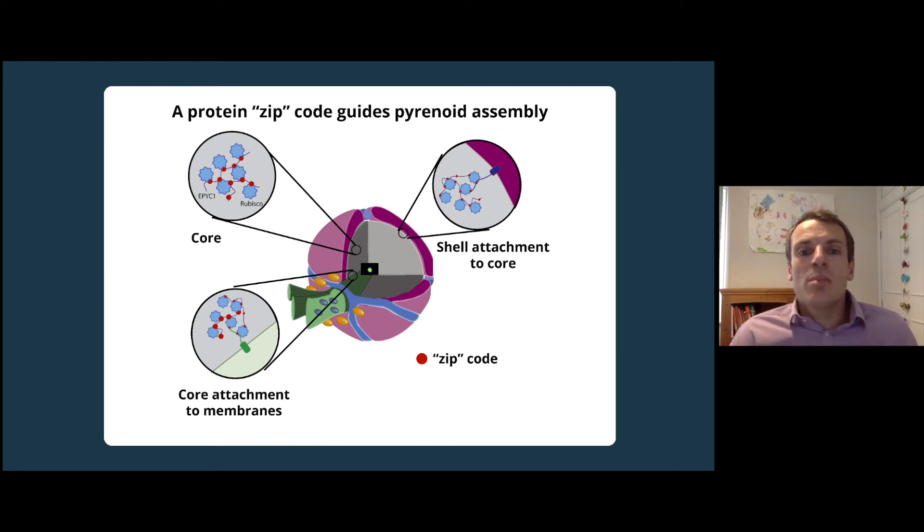One of the next surprising things we found is that the pyrenoid is highly dynamic. Prior to our work, the pyrenoid was always thought to be a relatively rigid structure. When looking at fluorescently labeled rubisco, we saw that it is continually moving.